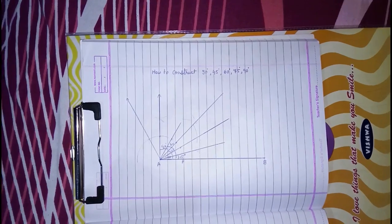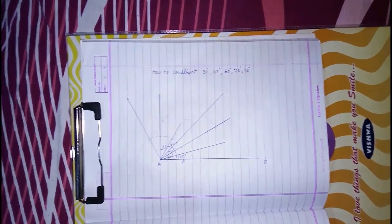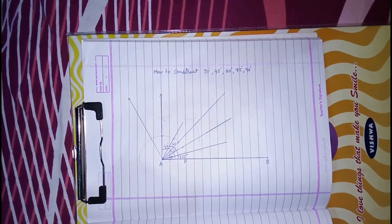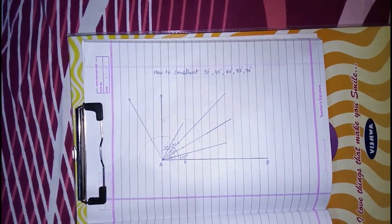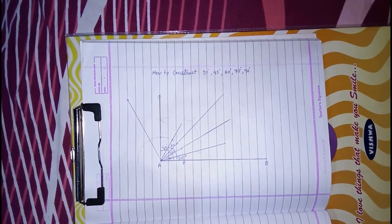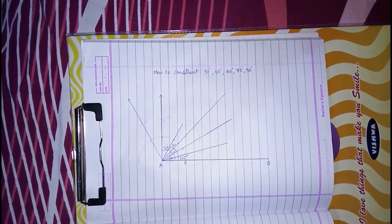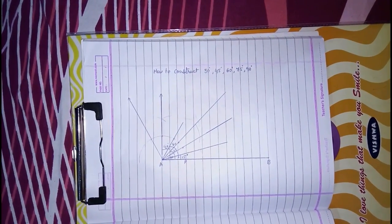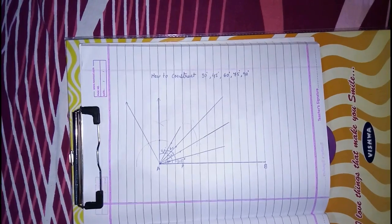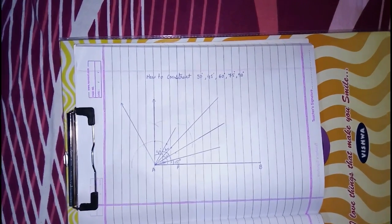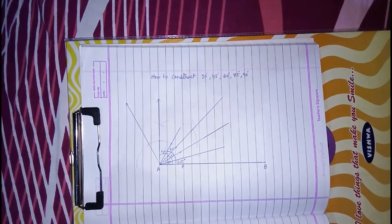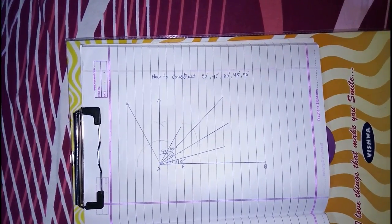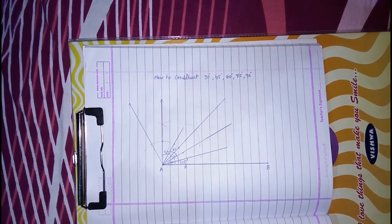So this way we can construct 15°, 30°, 45°, 60°, 75°, and 90°. Thank you for watching my video. If you like it, please subscribe to my channel. Thank you.